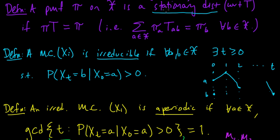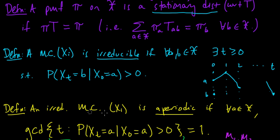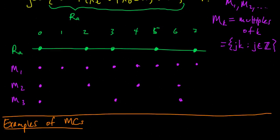We saw the definition of a stationary distribution, irreducibility, and aperiodicity for Markov chains, and in this video we'll take a look at some simple examples to illustrate these concepts. First, a small remark: when I defined aperiodicity, I only did it for irreducible Markov chains because I was going to use a slightly different definition, but I ended up using the general definition, so this holds even for Markov chains that are not irreducible.